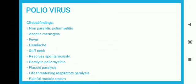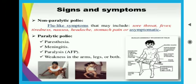The fourth form is paralytic poliomyelitis, a very severe form in which there can be a febrile crisis, life-threatening respiratory paralysis, and painful muscle spasms. In non-paralytic polio there are flu-like symptoms including sore throat, fever, tiredness, nausea, headache, stomach pain, and asymptomatic presentation.